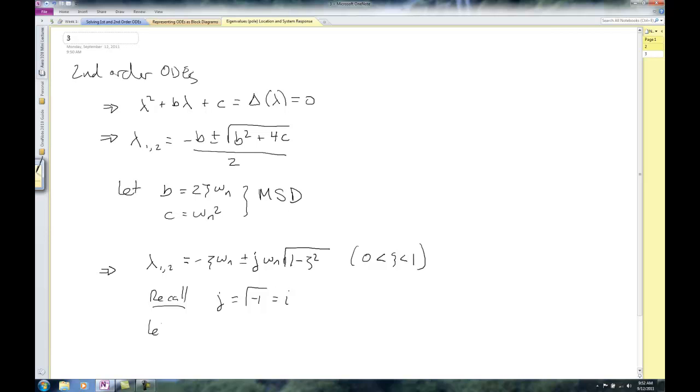What we found from before was that lambda 1 and 2 equals negative zeta omega n plus or minus j times omega n times the square root of 1 minus zeta squared. Remember that j equals square root of minus 1. A lot of times what we'll do is let zeta omega n equal sigma. This is just to make life easier. And omega n times the square root of 1 minus zeta squared, we'll call that omega d. Sigma here doesn't really have a name, but it really is about our response time.